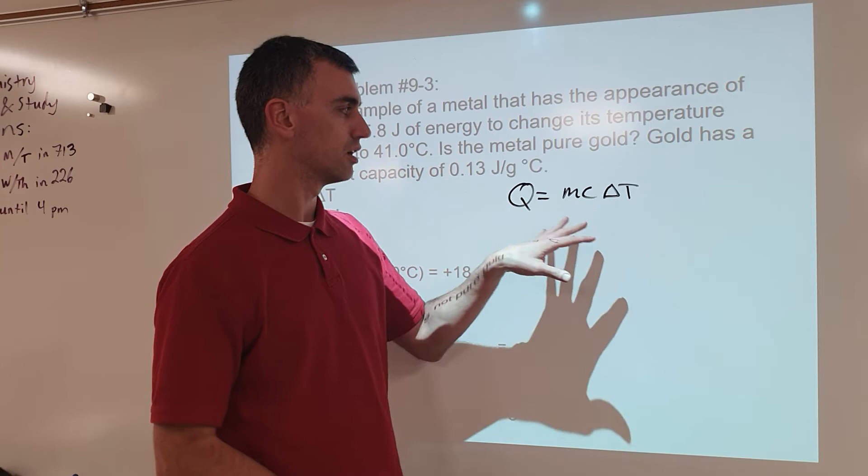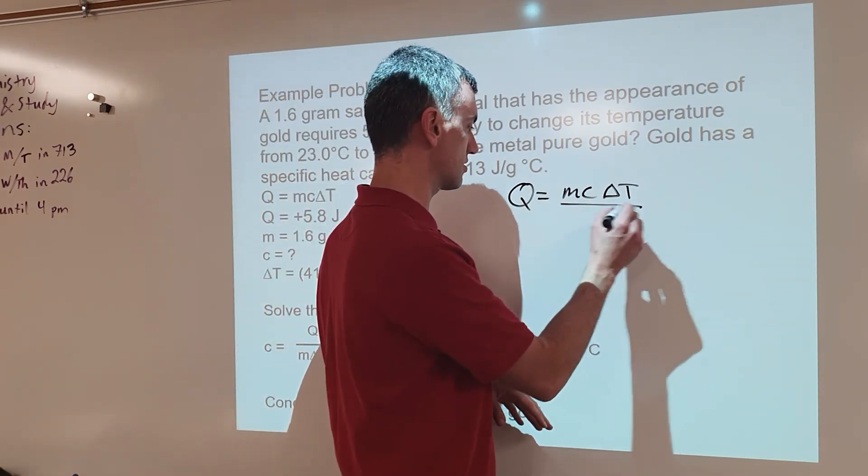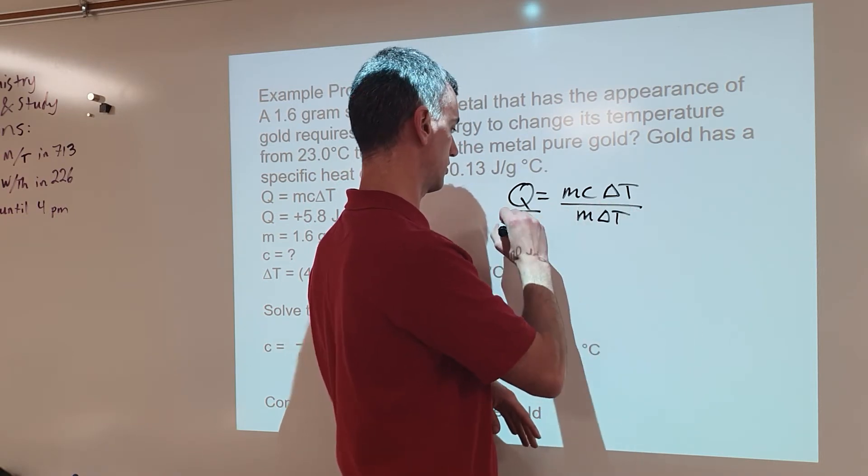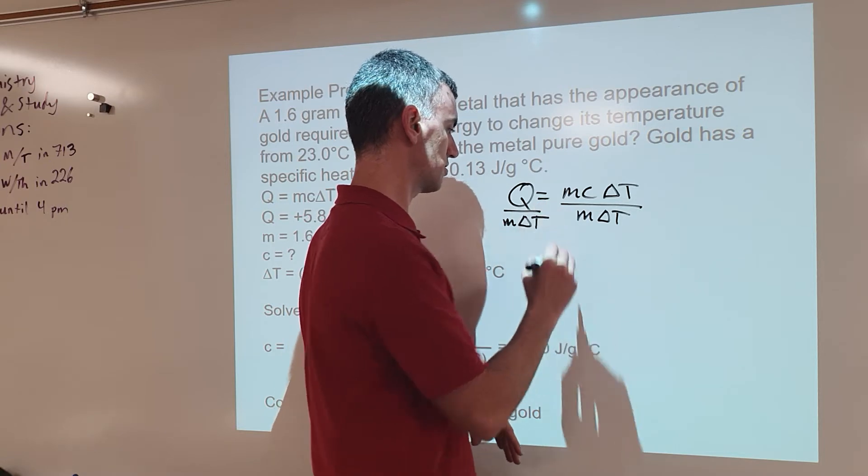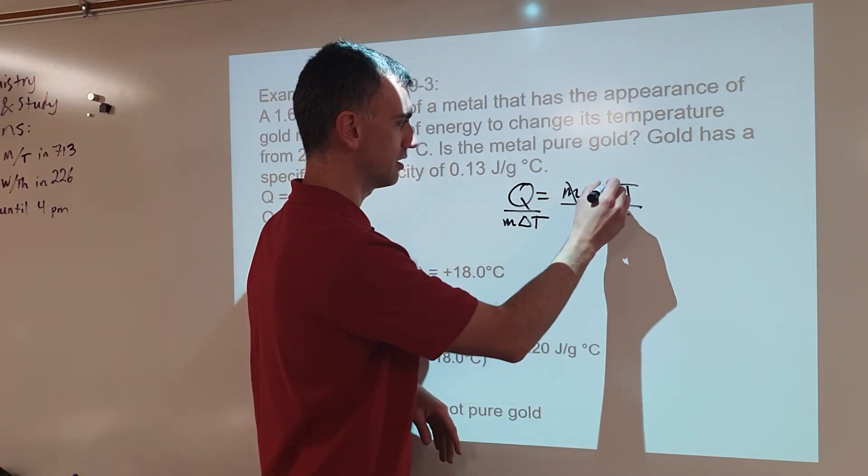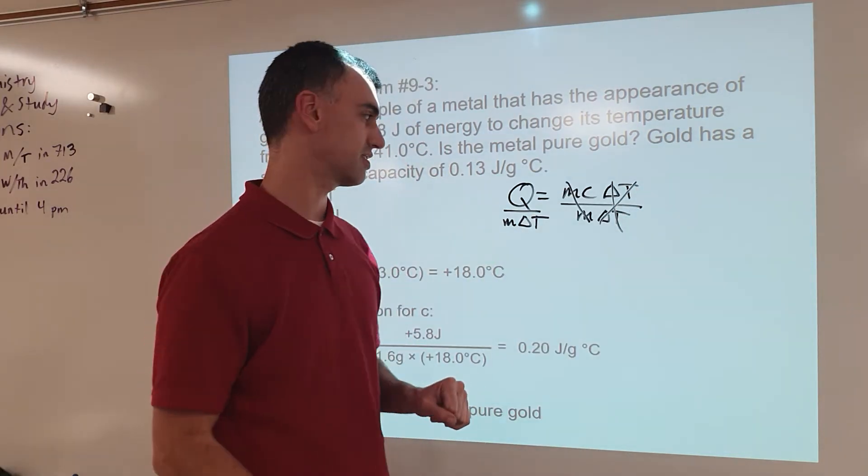So algebra demands that whatever we do to one side, we do to the other side also. So I'm going to divide both sides by mΔT. The reason why is if I divide by mΔT, then m cancels m and ΔT cancels ΔT to leave just c on this side.